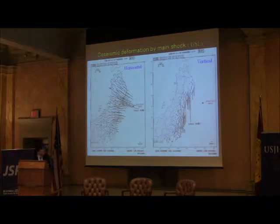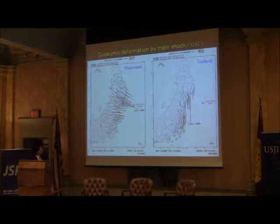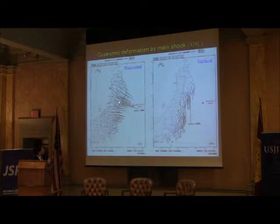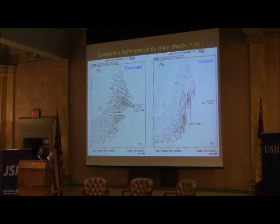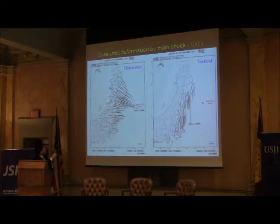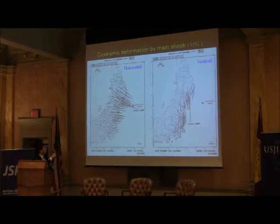Comparing before and after the earthquake, the eastern part of Japan caused a very large cluster of deformation. Horizontally, the Pacific side moved 4 to 5 meters to the east. On the contrary, the Japan Sea side moved 1 to 2 meters to the east, resulting in about 4 meters of extension across the Tohoku region.